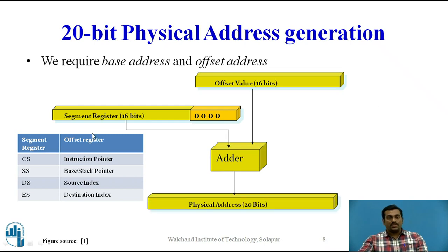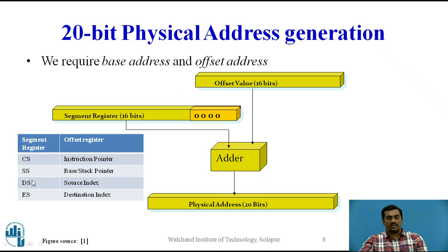The 16-bit segment register value can be present in any of the segment registers, while the offset value is obtained from the corresponding offset register. For example, to access an instruction from the code segment of memory, the base address will be stored in the code segment register and the respective offset value will be present in the instruction pointer. A similar explanation applies to the remaining segment registers and offset values.